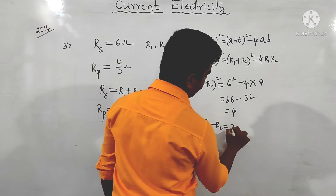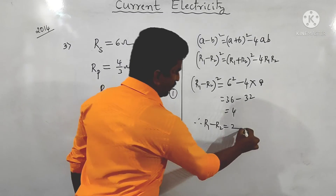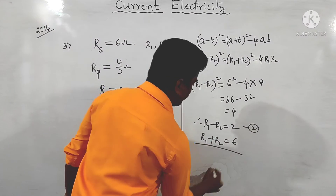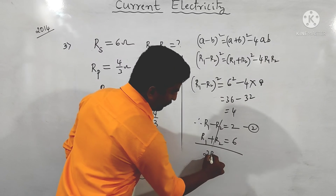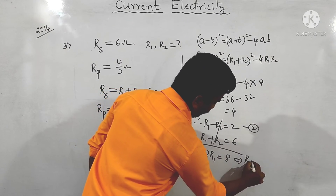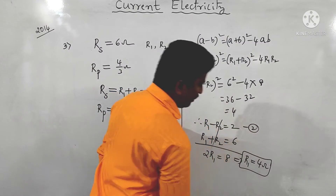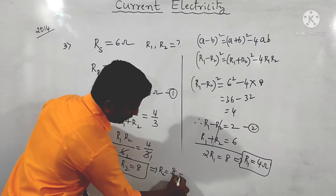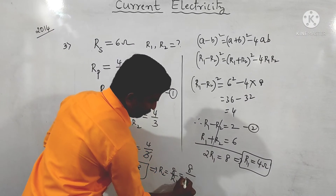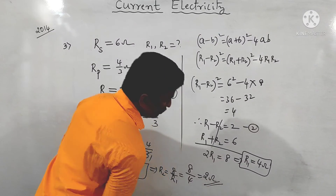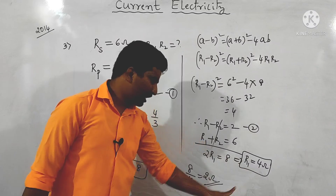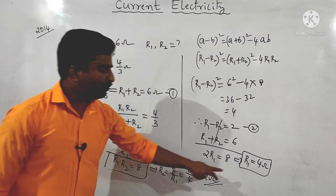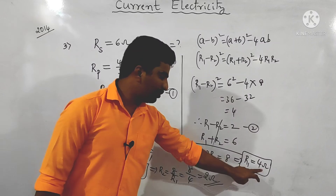Adding the equations: R1 + R2 = 6 and R1 − R2 = 2 gives R1 = 4 ohm. Substituting back: R2 = 8 / R1 = 8 / 4 = 2 ohm. Check: 4 × 2 = 8 and 4 + 2 = 6. So the correct answer is R1 = 4 ohm and R2 = 2 ohm.